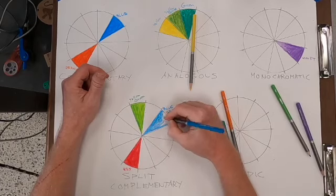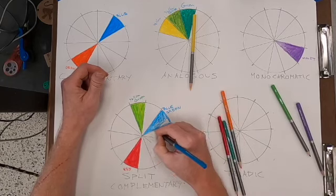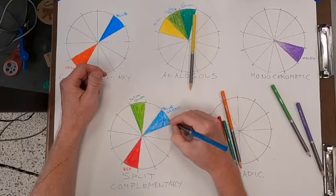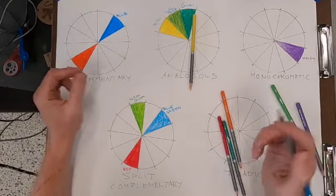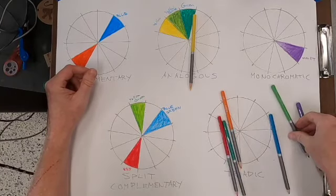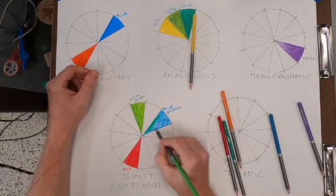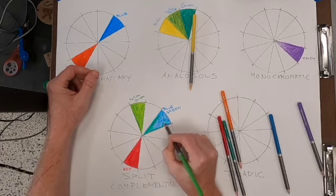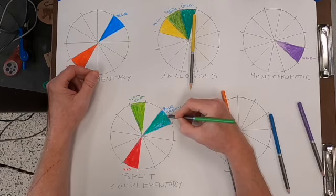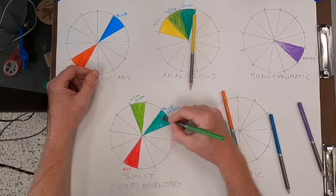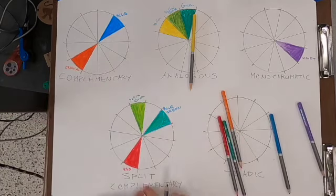This is not just for the color wheel - this is for you to use for the rest of the semester in your artwork. Case in point: your next assignment will be to do a drawing using each one of these color schemes, a different drawing for each scheme. Split complementary done.